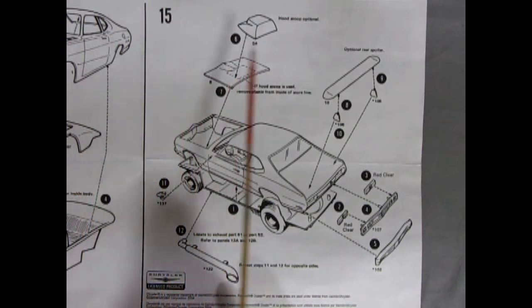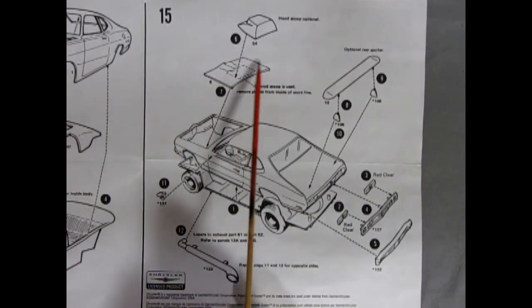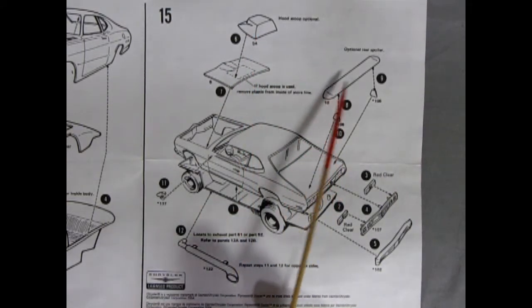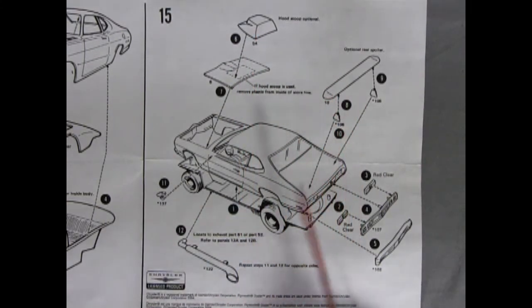Now if you want the street machine version you can cut the hole in for your engine, put on the hood scoop, put on the rear spoiler with the brackets and then add in these gigantic lake pipes.